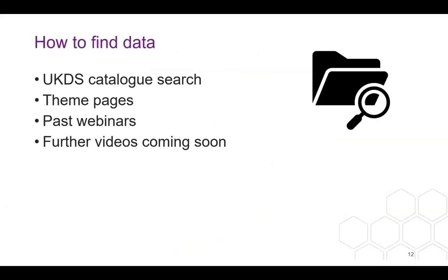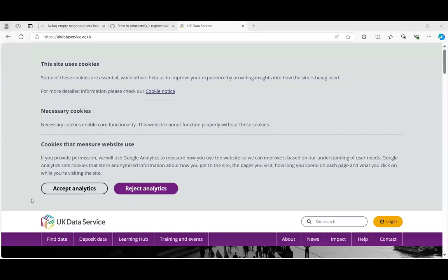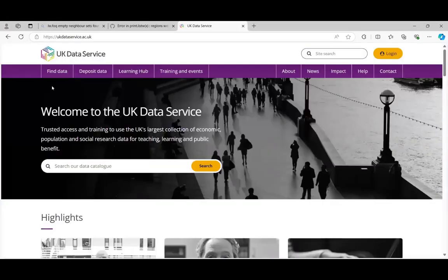How do we find data? We have a catalogue search, theme pages, and previous webinars if there's been one on a particular study you're interested in. We're also investing time in producing lots more asynchronous materials. I'm going to briefly stop sharing and locate the UK Data Service website — accepting analytics — to take you through what we have. To find data we can go into there, and we also have the Learning Hub with introductory modules on how to use data, data skills modules, and information about different types of data.